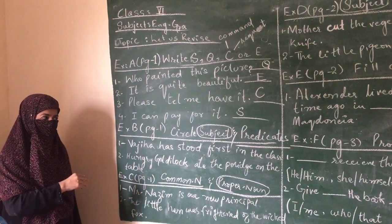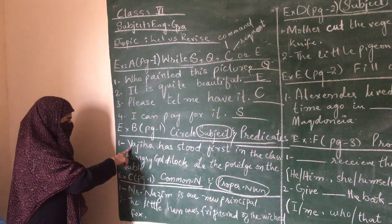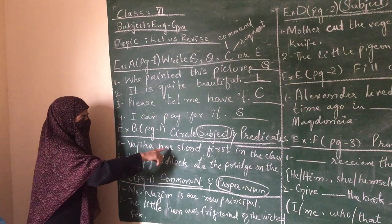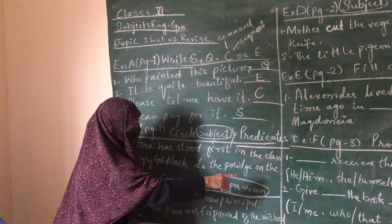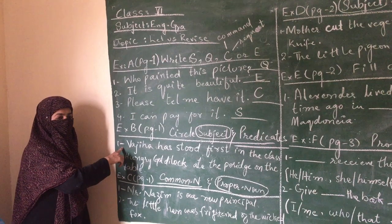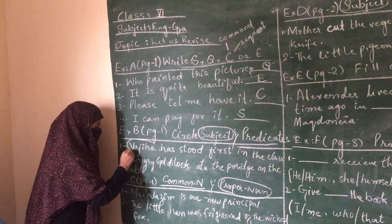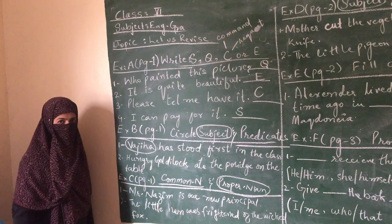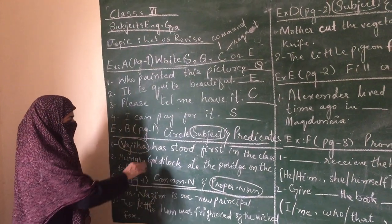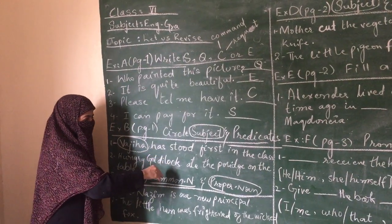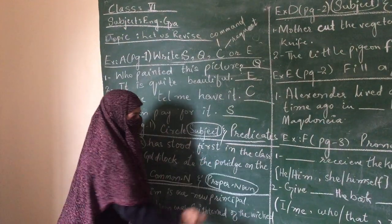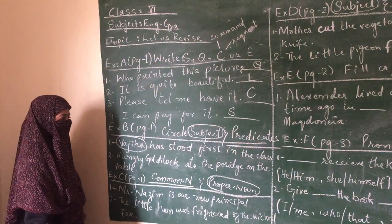You have to circle the subject and underline the predicate. Now what is subject? The word which we have talked about, what the sentence is about. Anything - person, thing, animal, place can be your subject. And predicate means the word which tells about the subject.